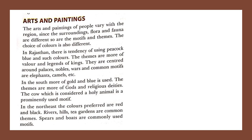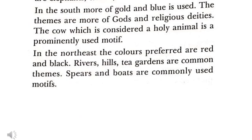Rajasthani paintings depict palaces, nobles, and war. In southern paintings, gold and blue colors are used, with themes mostly related to gods and religious deities, and the cow is a prominent motif. In the North East, red and black colors dominate, with rivers, hills, tea gardens, spears, and boats as common themes.